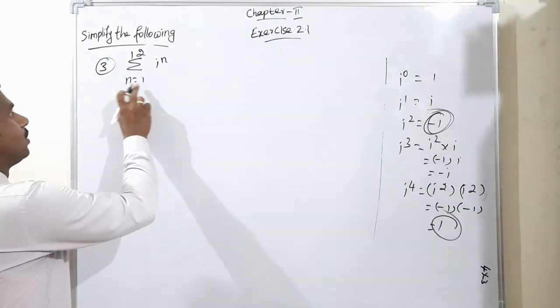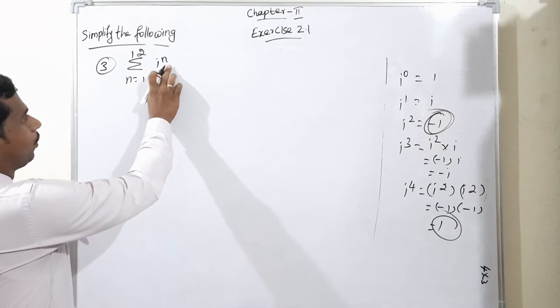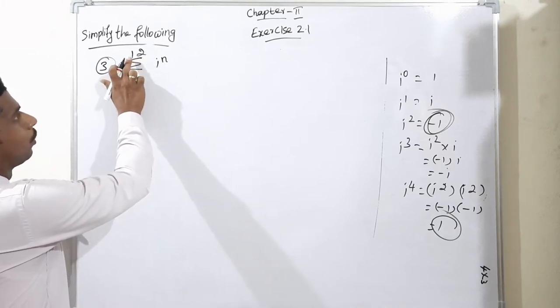So summation of n equals 1 to 12 of i to the power n. We have to put n values 12 times together.